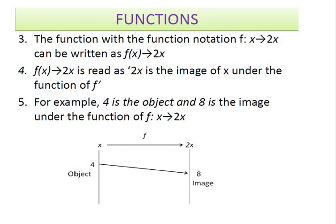The function with a notation f: x→2x can be written as f(x)→2x. This notation is read as 2x is the image of x under the function of f. For example, 4 is the object, and 8 is the image under the function f: x→2x.